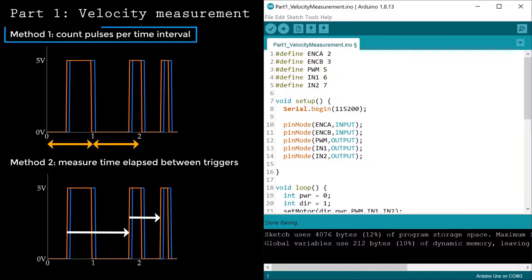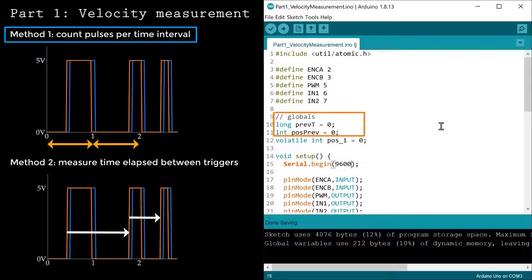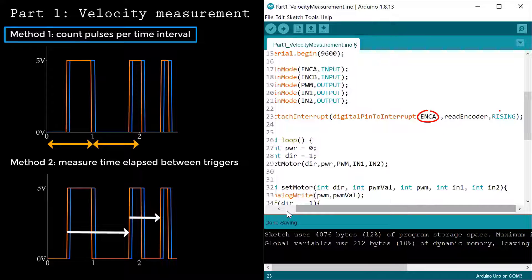Let's test the speed measurement methods on the Arduino. Here, I'm defining the encoder pins and a global variable that stores the number of counts read by the encoder. Now, I'll trigger an interrupt when encoder A rises. Each time the interrupt is triggered, it will call the readEncoder function.